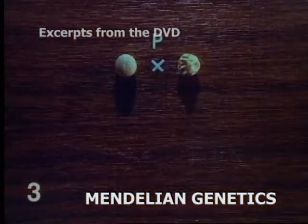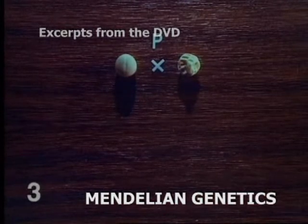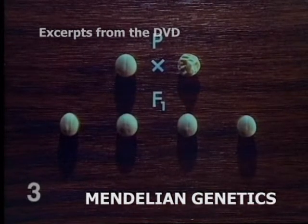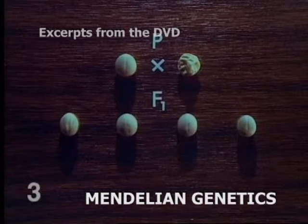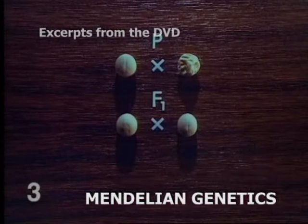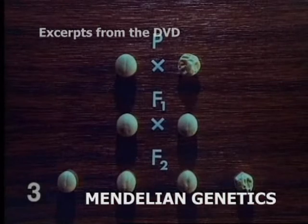In the parental generation P, two purebred plants were cross-pollinated. Seeds of their hybrid offspring, F1, were all round. When we crossbreed these seeds, we have generation F2. The seeds of these plants were round and wrinkled in the ratio of 3 to 1.